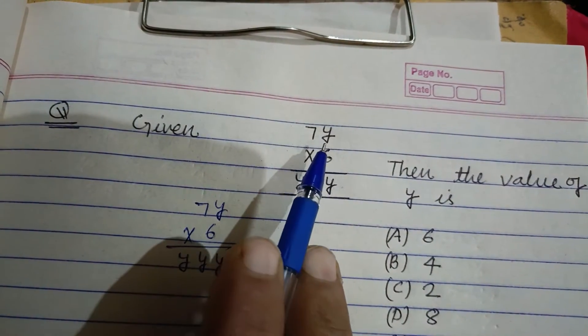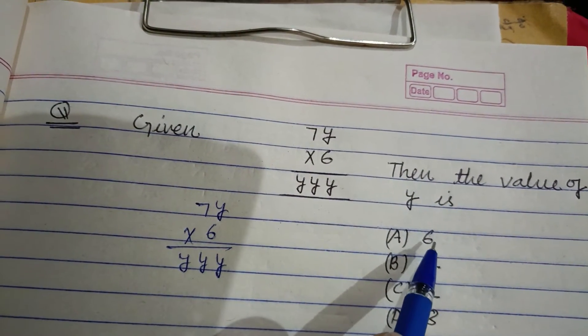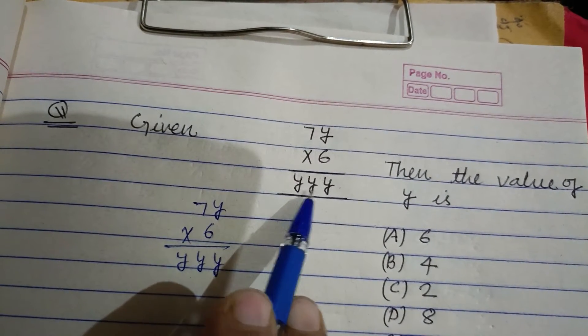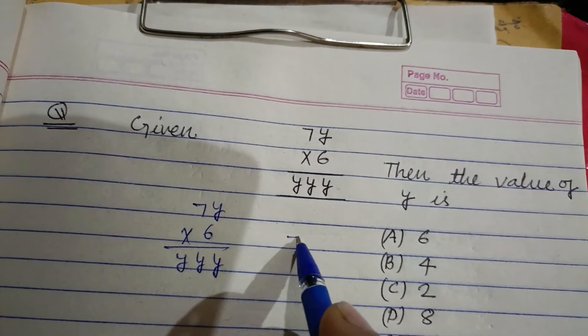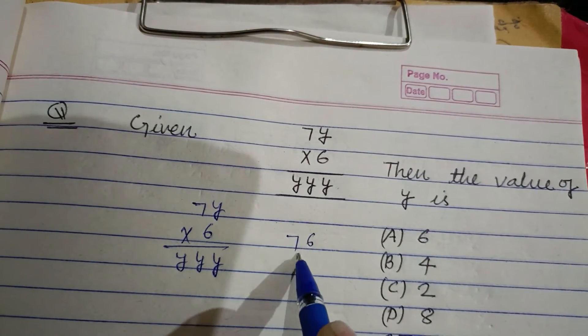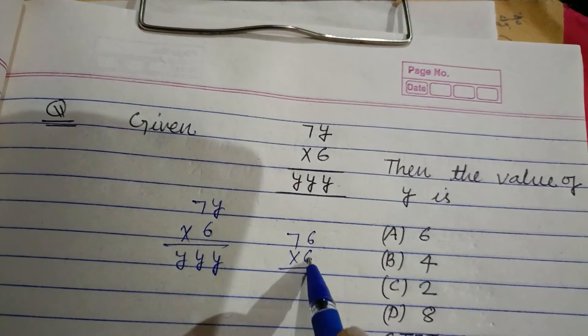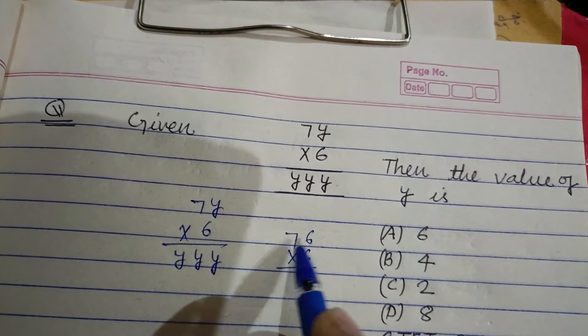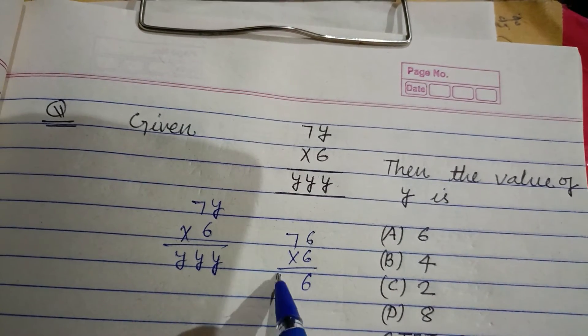We put the value of y from the given options to get the same value y4y. So if we try 6: 6×6 is 36, 6×7 is 42, 42 and 3 is 45. This gives 456, which is not the result.